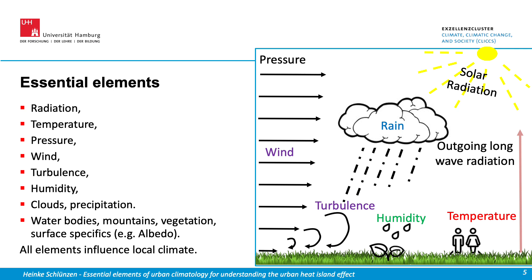All these essential elements of the atmosphere and the local climate are not homogeneously distributed, but they differ in the different climate zones. In addition, within a climate zone, water bodies like ocean inlets or lakes, mountains, and different vegetation types like forests or grassland, as well as surface specifics, influence the local climate. Surface specifics include the emissivity of long-wave radiation from surfaces, the reflectivity of short-wave radiation, and the heat storage capability of the surfaces and the ground.